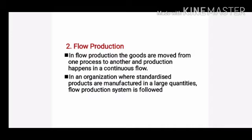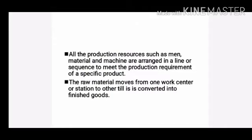In flow production, the goods are moved from one process to another and production happens in a continuous flow. In an organization where standardized products are manufactured in large quantities, the flow production system is followed. The goods flow from one process to another in a continuous flow.